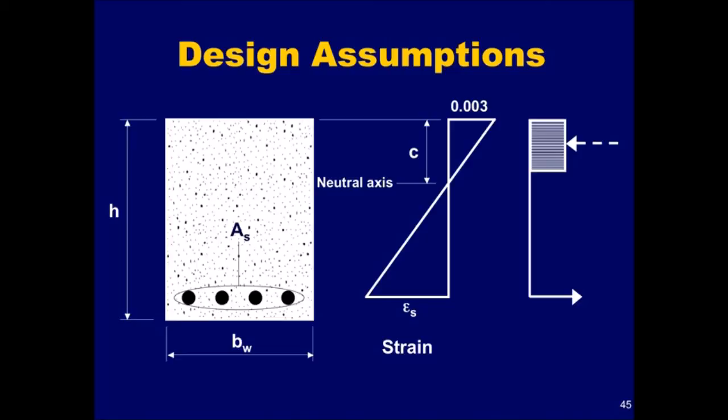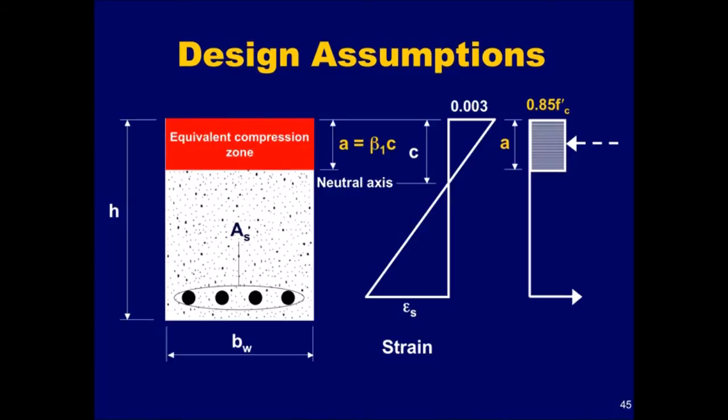The sixth and last design assumption is that an equivalent rectangular concrete stress distribution can be used to satisfy the requirements of section 10.2.6, which contains the fifth design assumption. In this equivalent distribution, a concrete stress equal to 85 percent of the specified concrete compressive strength, F'c, is uniformly distributed over an equivalent compression zone. This compression zone is bounded by the edges of the cross section and a straight line parallel to the neutral axis at a distance equal to A from the maximum compressive strain fiber.